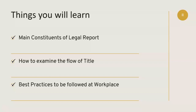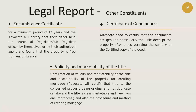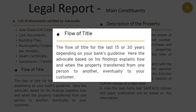A legal report usually comprises a list of documents verified by the panel advocate, description of the property, and the flow of title for the last 15 or 30 years depending on your bank's guideline. There are other constituents as well — search report, encumbrance certificate, certificate of genuineness, certificate of validity and marketability of title — which are equally important. But today we will focus on the first three, particularly the flow of title, which is most crucial to understand.